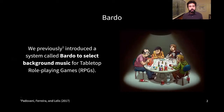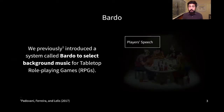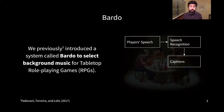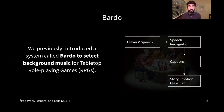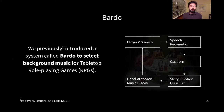Three years ago, we introduced a system called Bardo, and that system selected background music for tabletop RPG players. It worked by taking the player's speeches and using a speech recognition system to generate the captions, which we used to train an emotion classifier. The emotions from this classifier would be used to select hand-out or music pieces, which would then be played to the players while they were playing the game.